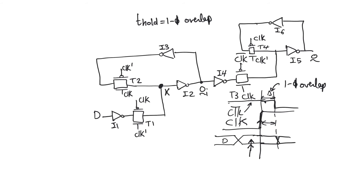Why are we afraid of D getting into node X? Because during the one phase of the clock after the active edge, it is smooth sailing from X all the way to Q. Transmission gate T3 will be on during the one phase of the clock, and therefore any value that manages to seep into X will make it out to Q. That is not the value we want to see on Q after the active edge — after the active edge, we want to see the value that was captured, not any value that changes after the active edge.